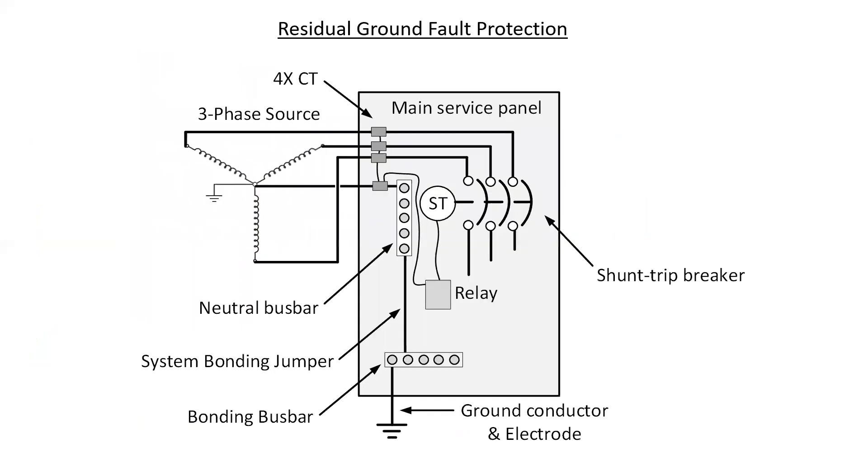The final one is residual ground fault protection. Very similar. It does exactly the same thing, but instead of having one large CT, it has four individual or smaller CTs. Now this style is often built into a ground fault protection breaker.